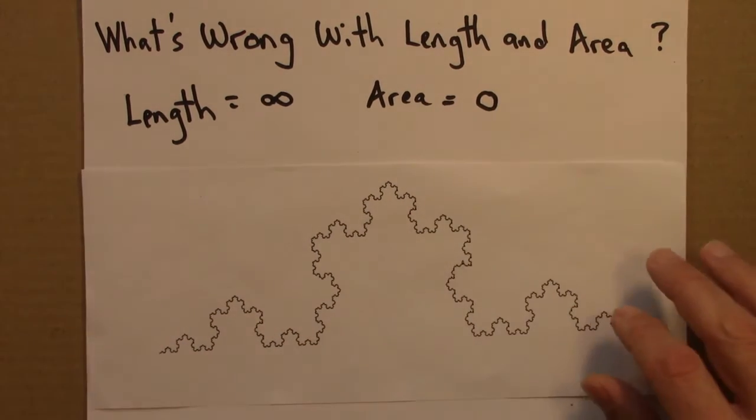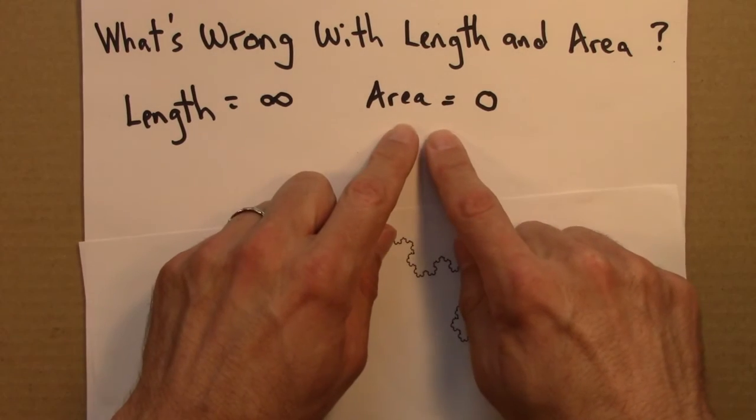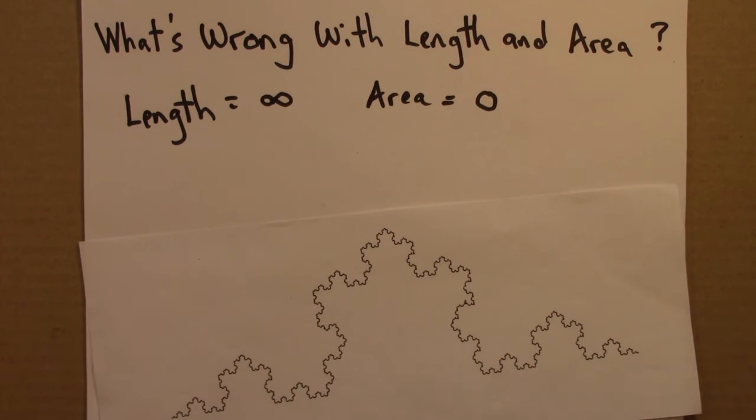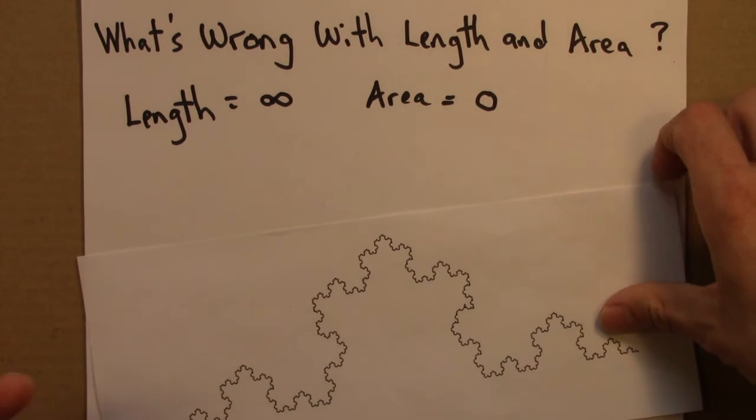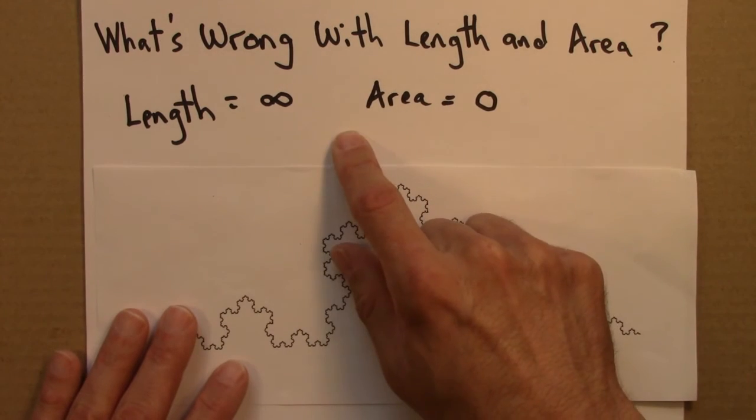And so the answer is, right, so length, that means we're assuming it's one-dimensional. Area means we're assuming it's two-dimensional. And the answer is, well, it's not either of those. It's a different sort of dimension. And so we need to think about, get the dimension right, in order for us to be able to talk about the size, length, or area, or something else.